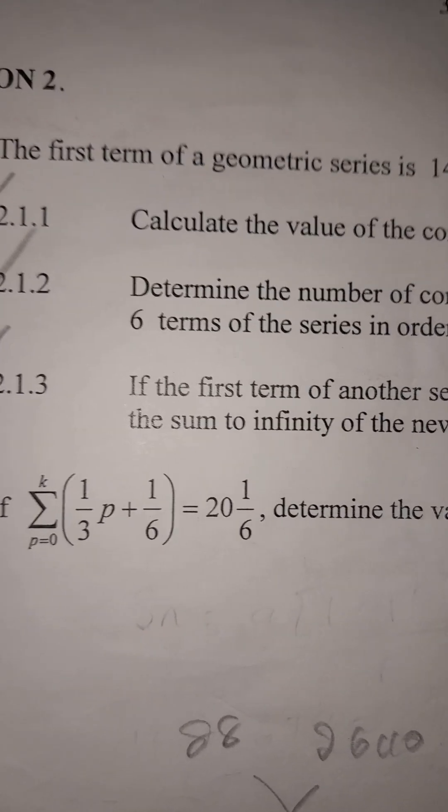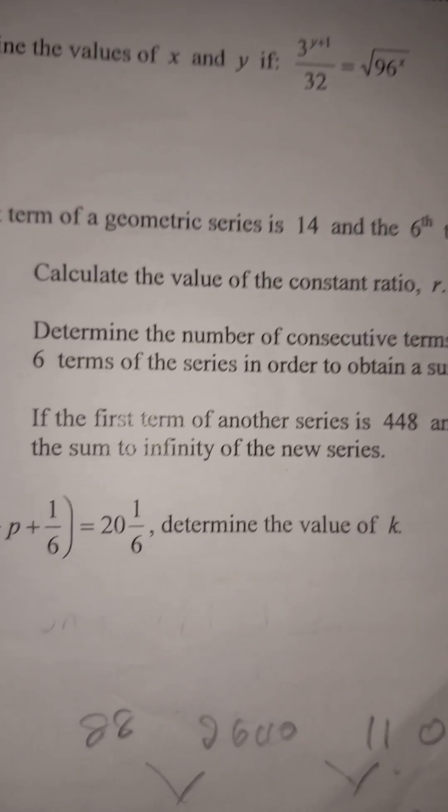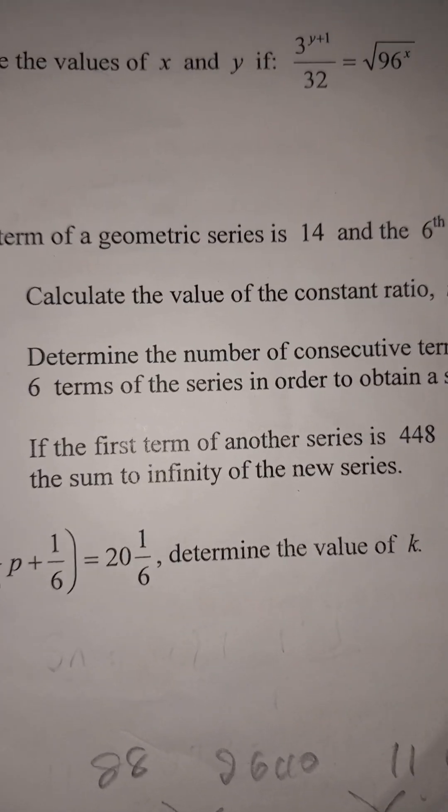At 2.1.3: if the first term of another series is 448 and the sixth term is 14, calculate the sum to infinity. We need to find r first. Using the general term formula: ar^5 = 14, with a = 448, so 448·r^5 = 14.